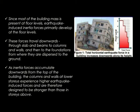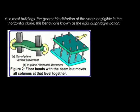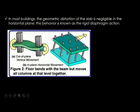As you can see in the picture, the total horizontal earthquake force in the building increases downwards towards its base. In most buildings, the geometric distortion of the slab is negligible in the horizontal plane — this behavior is known as the rigid diaphragm action. In the figure, you can see that the floor bends with the beam but moves all the columns at that level together. Basically, the beam moves with it and the columns dislocate or slant.